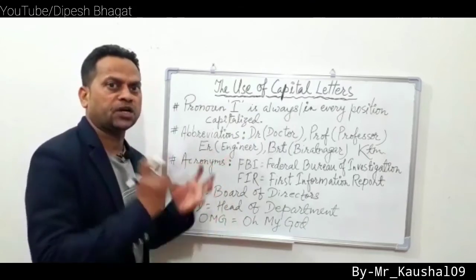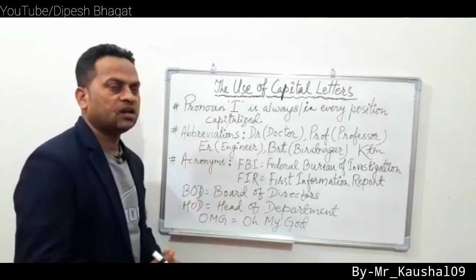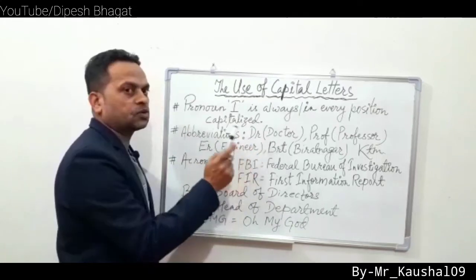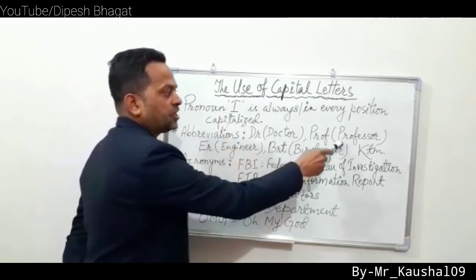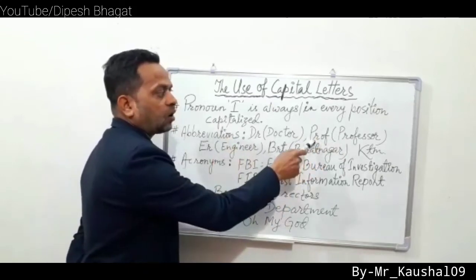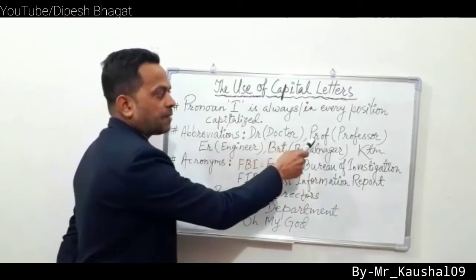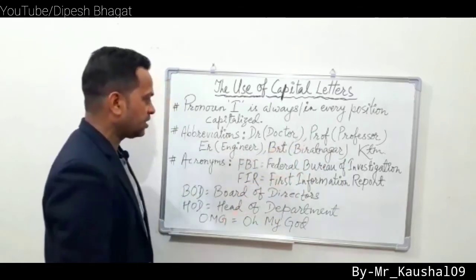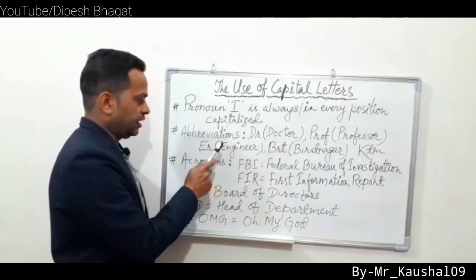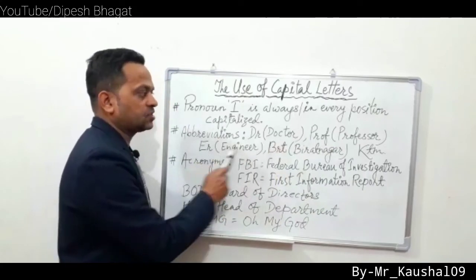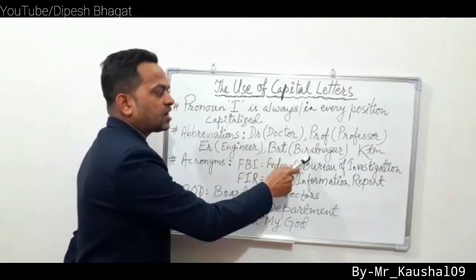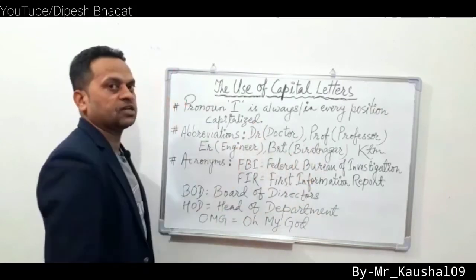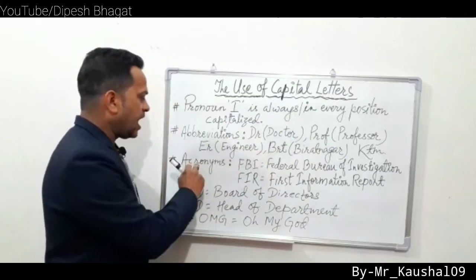Similarly, abbreviations — which means the shortened form of a word — are capitalized. For example, the abbreviation of 'doctor' is 'Dr', 'professor' is 'Prof', 'engineer' is 'Er'. Place names like Biratnagar abbreviated as 'BRT' and Kathmandu as 'KTM' are also abbreviations.